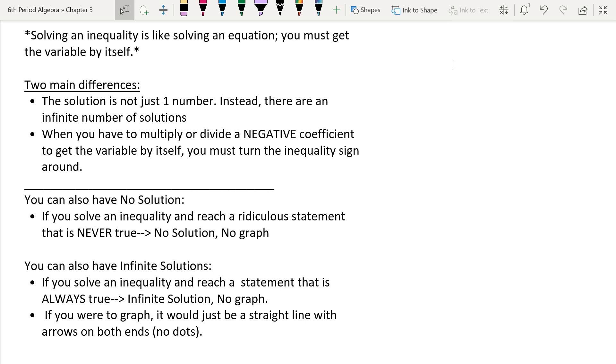So, if we have a no solution, this is when we try to solve our inequality and we reach a ridiculous statement that's never true. And so, when that happens, we just write our answer to be no solution, and because there's no solution, you wouldn't have any graphs.